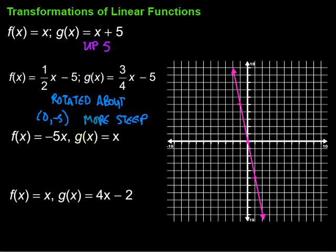As you're graphing these lines, notice that the slope of this line is negative because it goes down from left to right. Do yourself a favor and do that little check as you graph. The biggest mistake students make is going to the right instead of to the left, ending up with a positive slope line when the slope is actually negative.